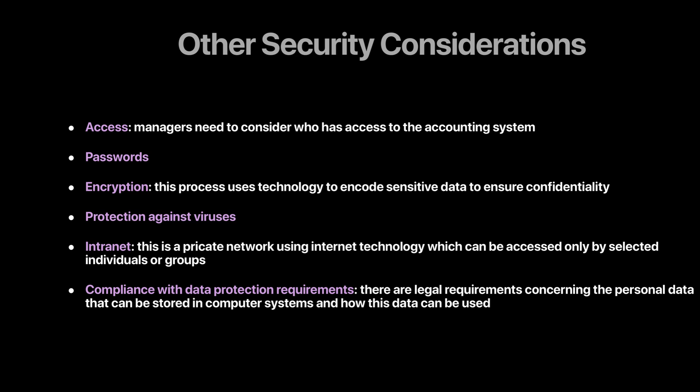Other security considerations include determining which staff at what level should get access to the accounting system. Passwords need to be installed. Encryption — the technology used to encode sensitive data — is required to ensure confidentiality. Protection against viruses must be in place. An intranet, which is a private network accessible only within the offices by selected individuals, can also be used to control access. Finally, firms must ensure compliance with data protection legal requirements.